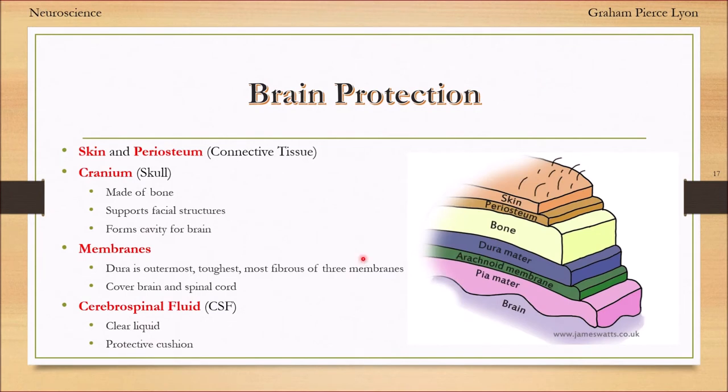Our brain is extremely important and we have to protect it. Our outermost layer is the skin, then the periosteum connective tissue, then bone - our cranium, our skull. Then we have membranes: the dura matter, the arachnoid membrane, and pia matter. We also have cerebral spinal fluid, which is a clear protective cushion for the brain. If you were to get in a car accident, your brain would actually be colliding with your skull. That's what happens with traumatic brain injuries - a collision between the brain and the skull.